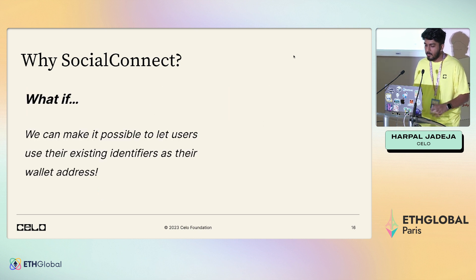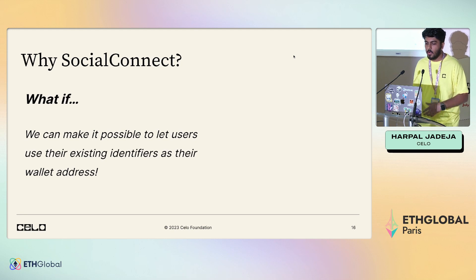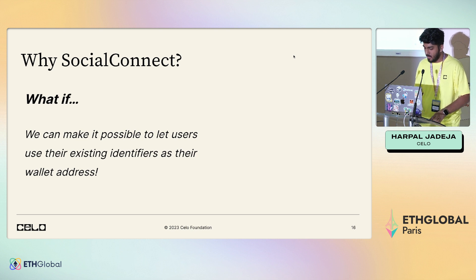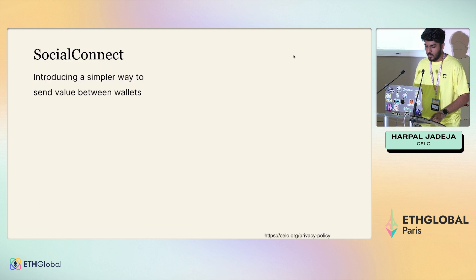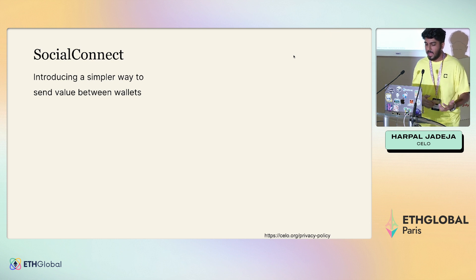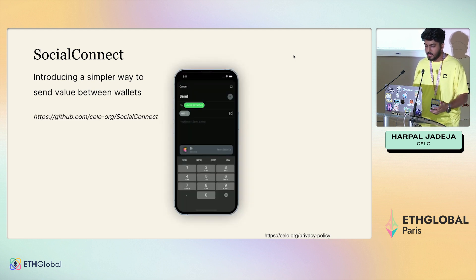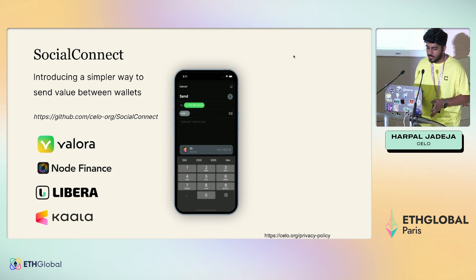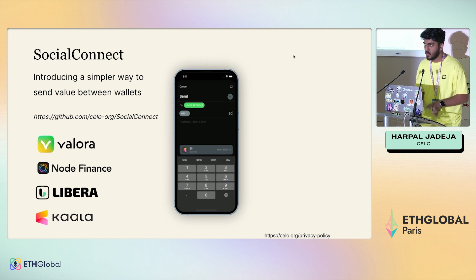What if we can let users use their existing identifiers as their wallet address? What if the user can just select their Twitter handle as their wallet address, so if a friend wants to send tokens or use their address, they can just put in that Twitter handle? And that's what Social Connect is — a simpler way of sending value between wallets that can be expanded into other things. It's basically ENS, but you can decide what the identifier can be. Here's the GitHub repo, and this is a screenshot of how it looks in an app. It's already live. Valora, Node Finance, Libera, and Kala are already using Social Connect in production.